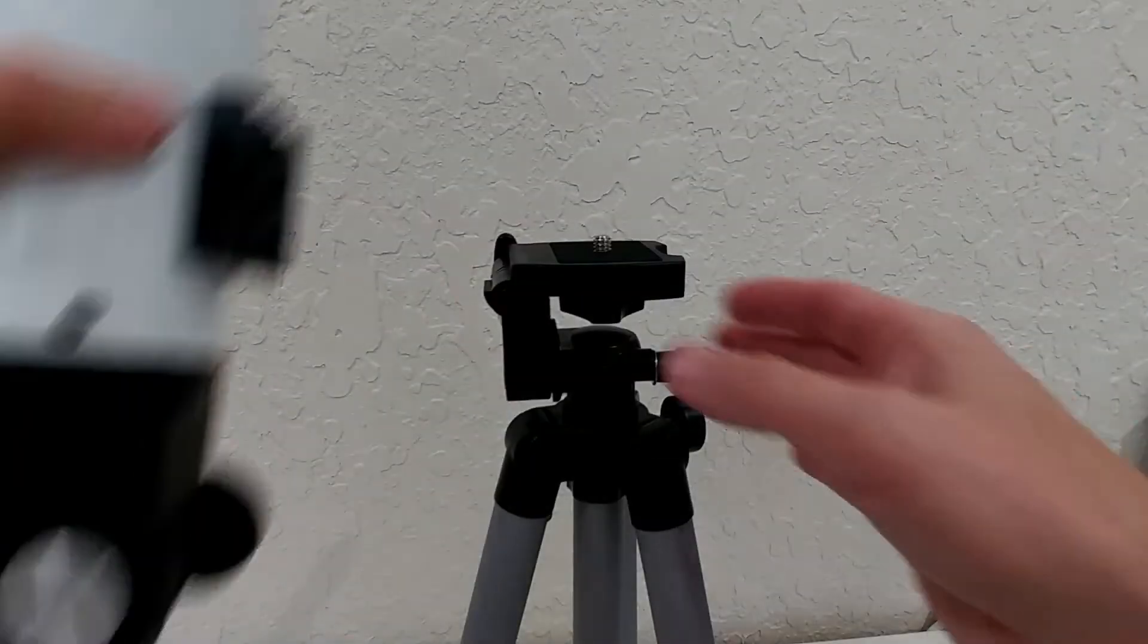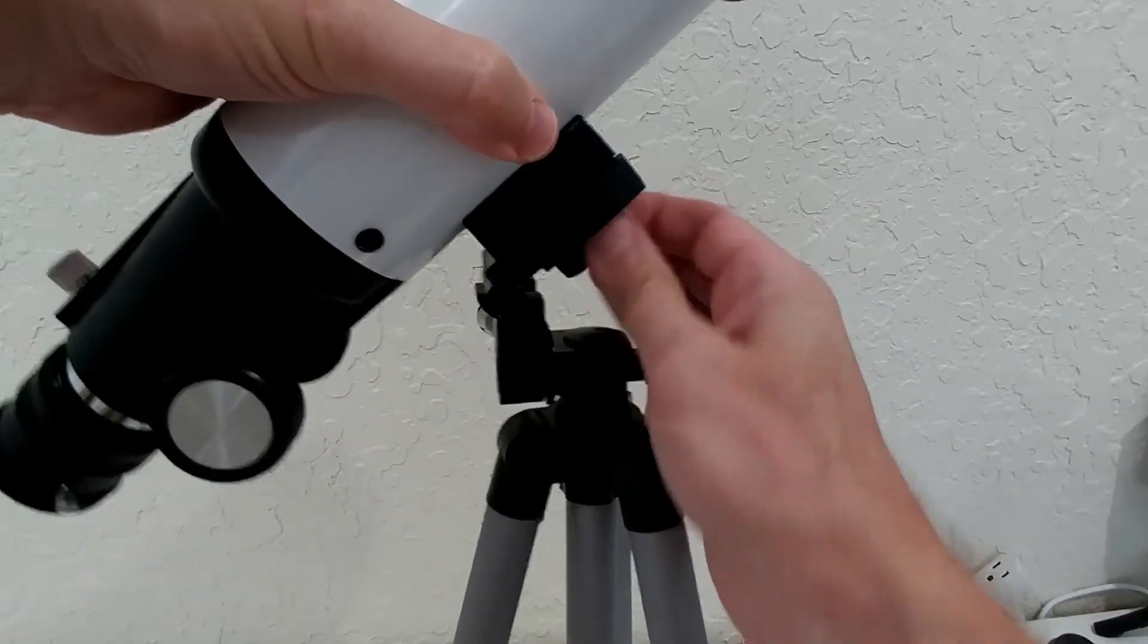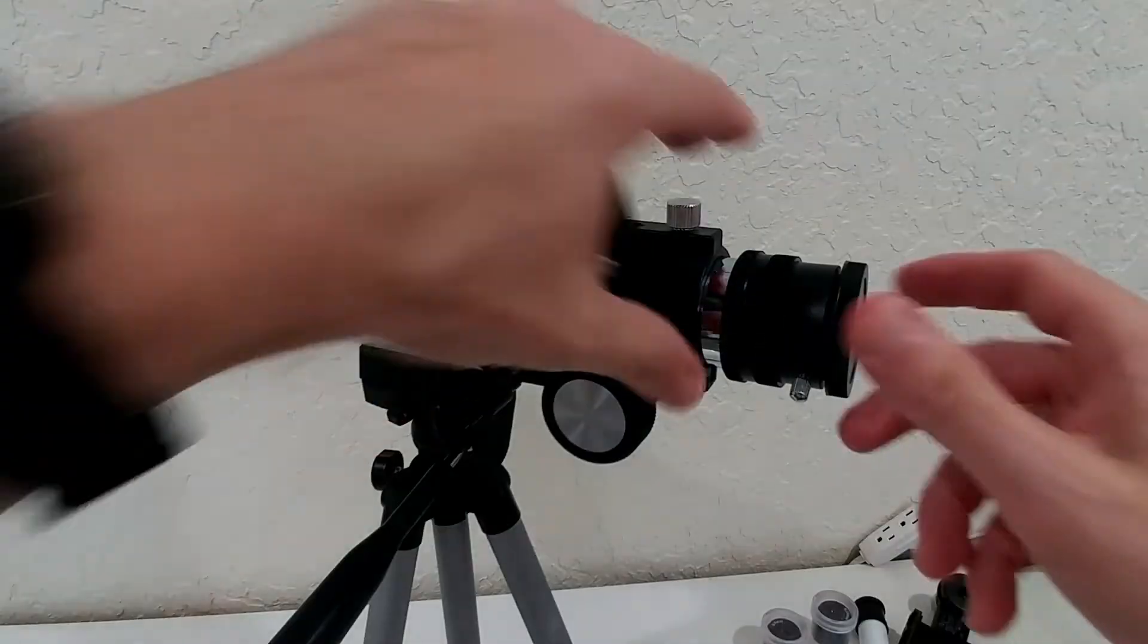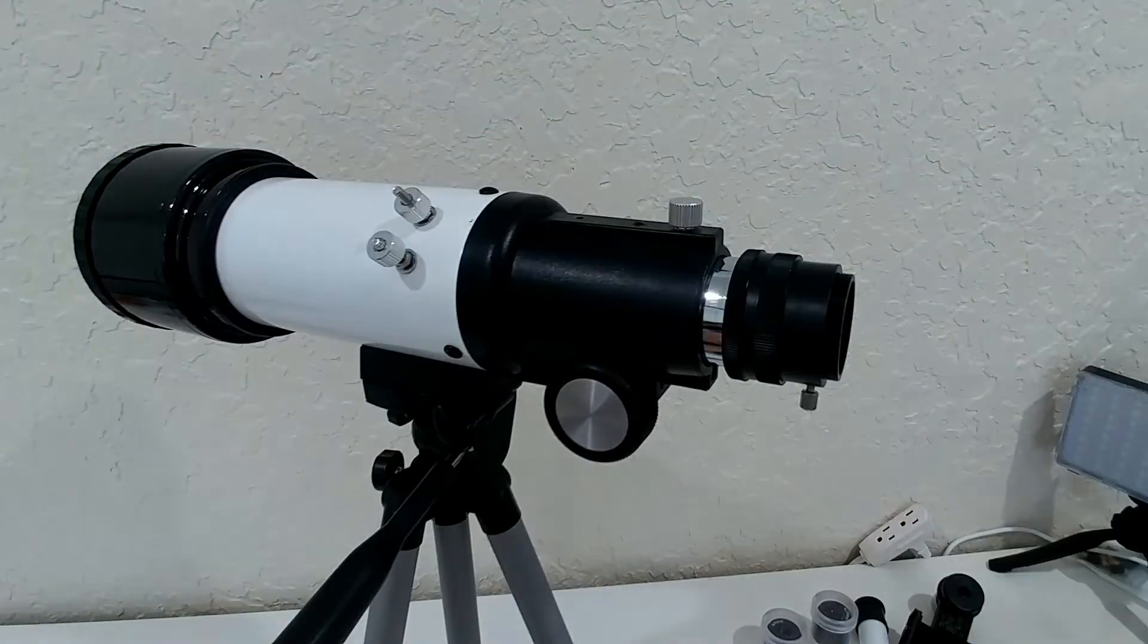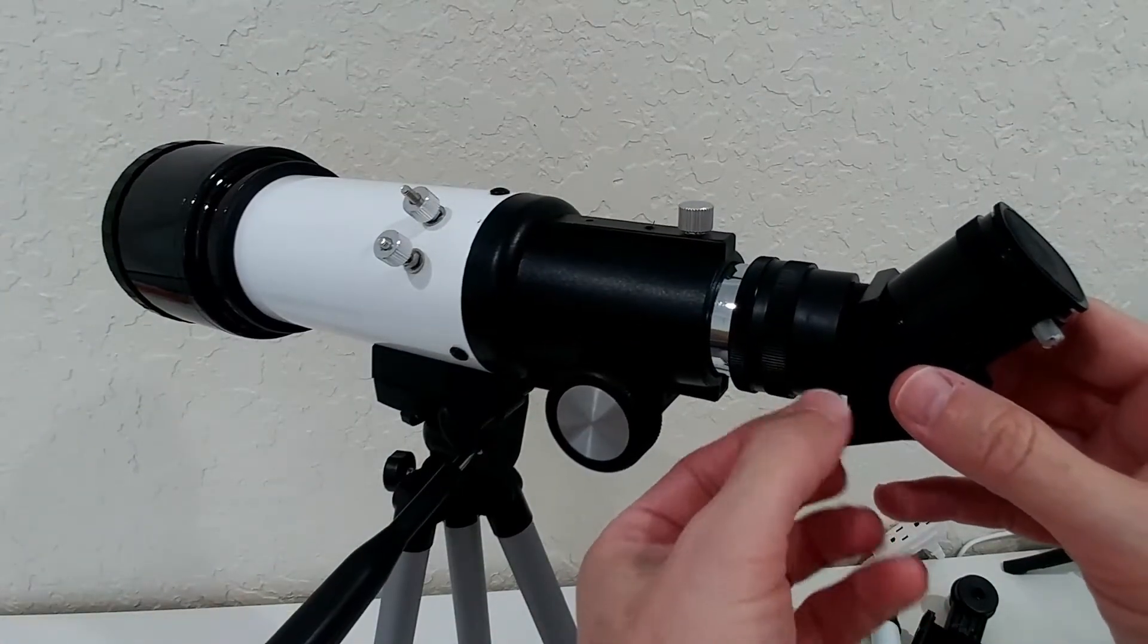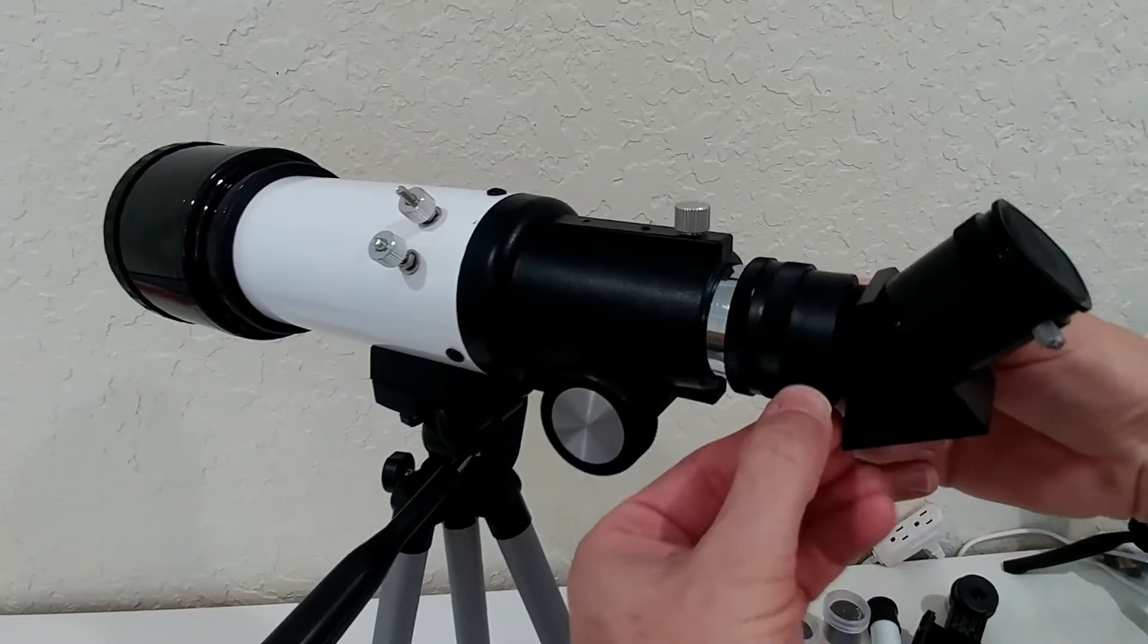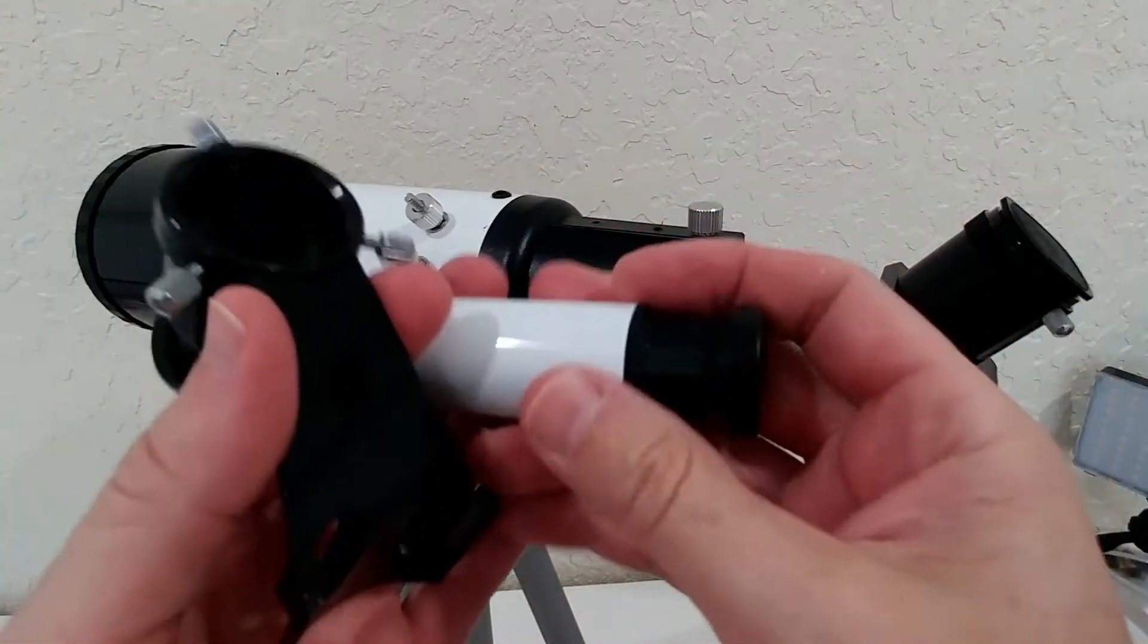Here's the first thing which we have to attach and you can see how easy this goes, it's already done. Then we have to attach the prism, so we're just removing this dummy part here. Now the next thing is the prism, so you have to make sure that these screws are loose and now you can tighten them to secure the prism in place.